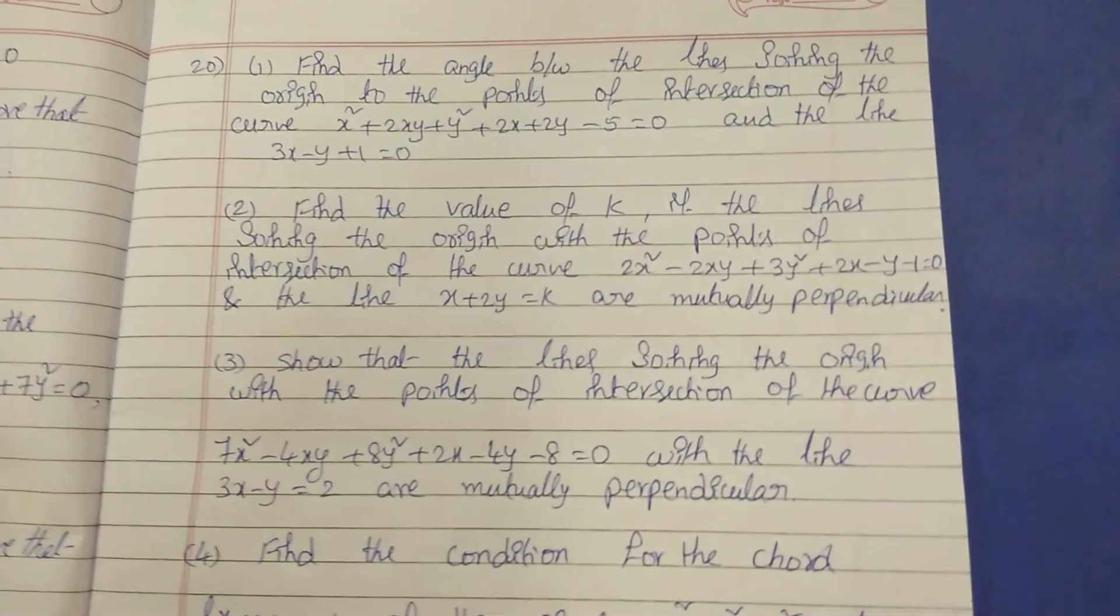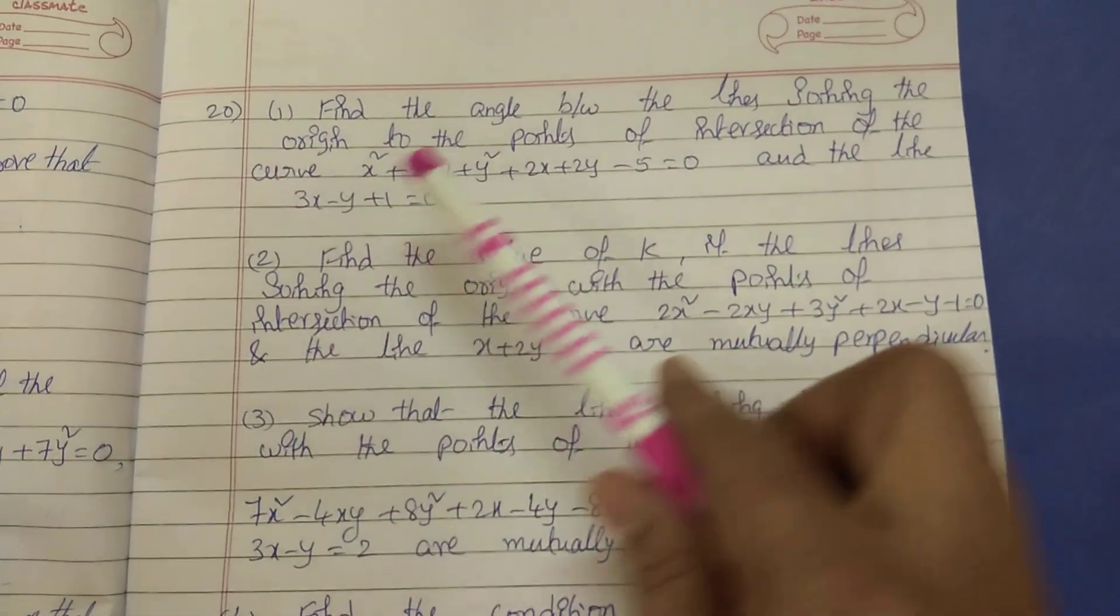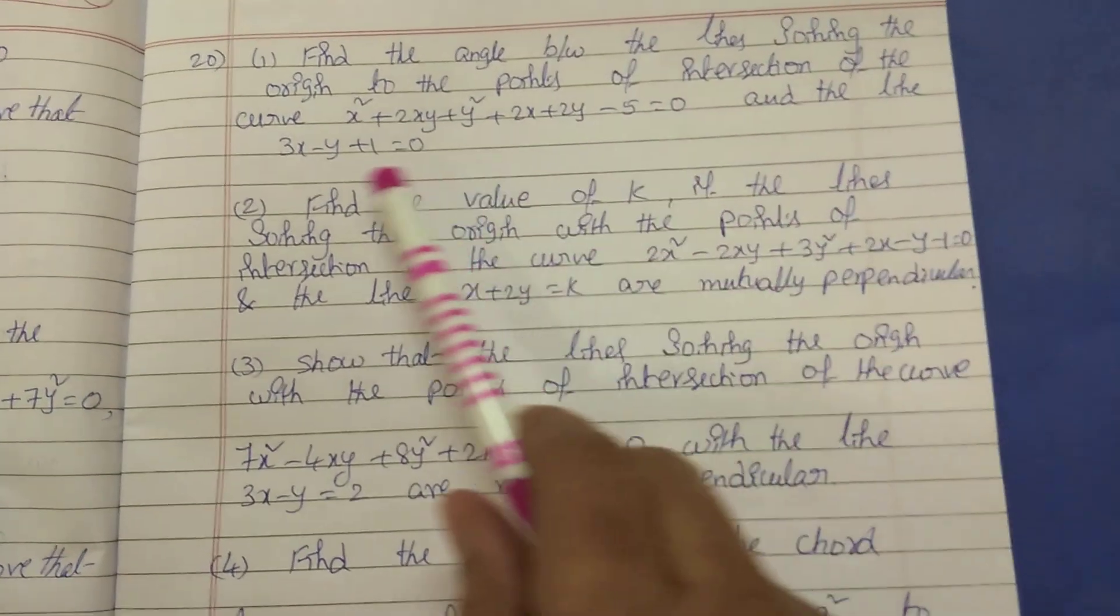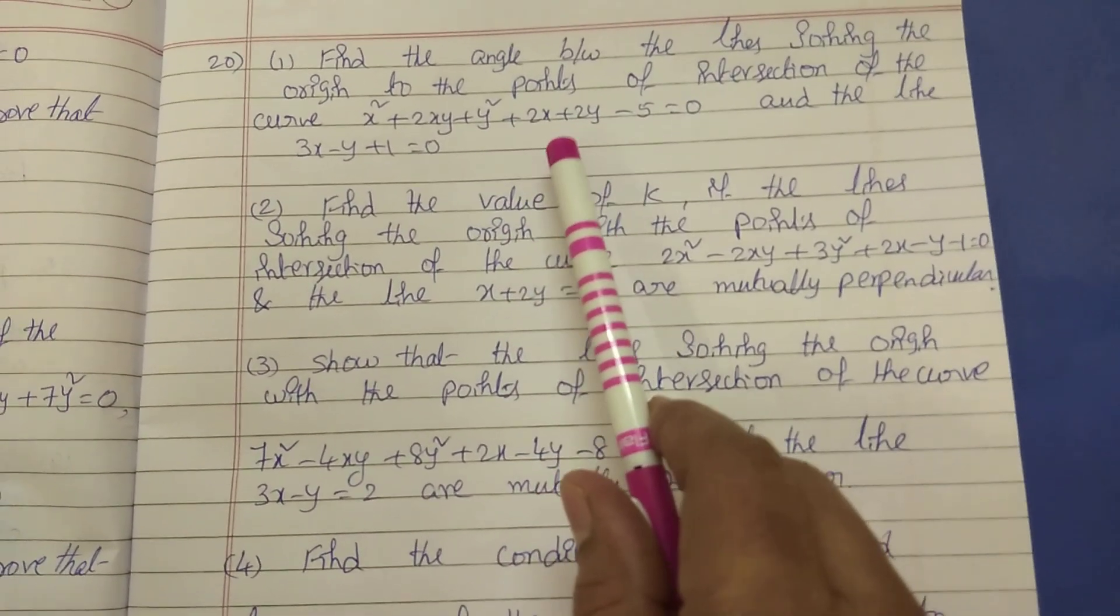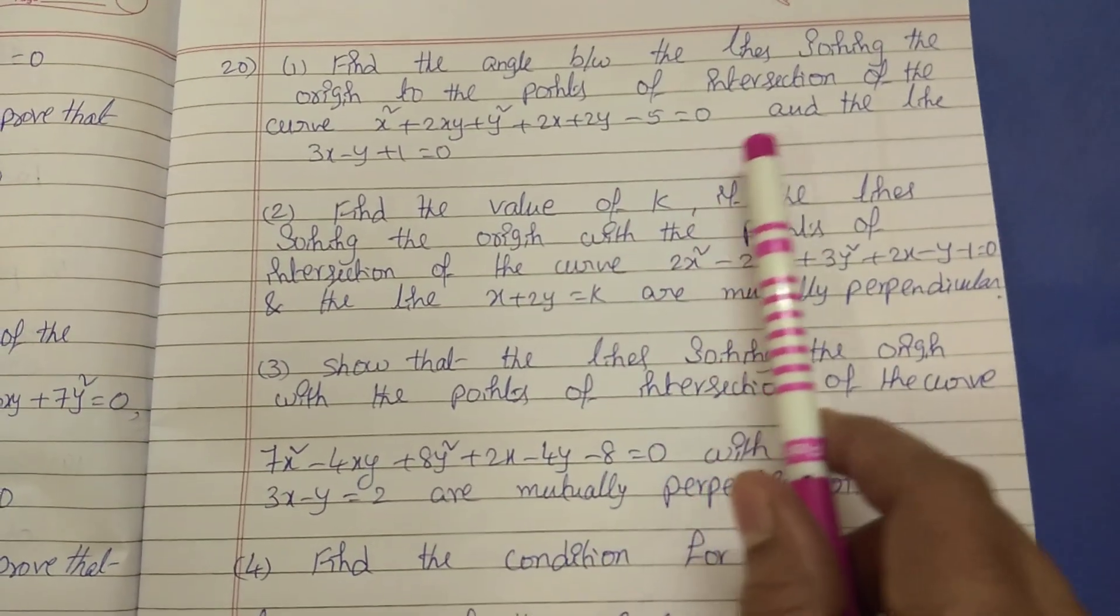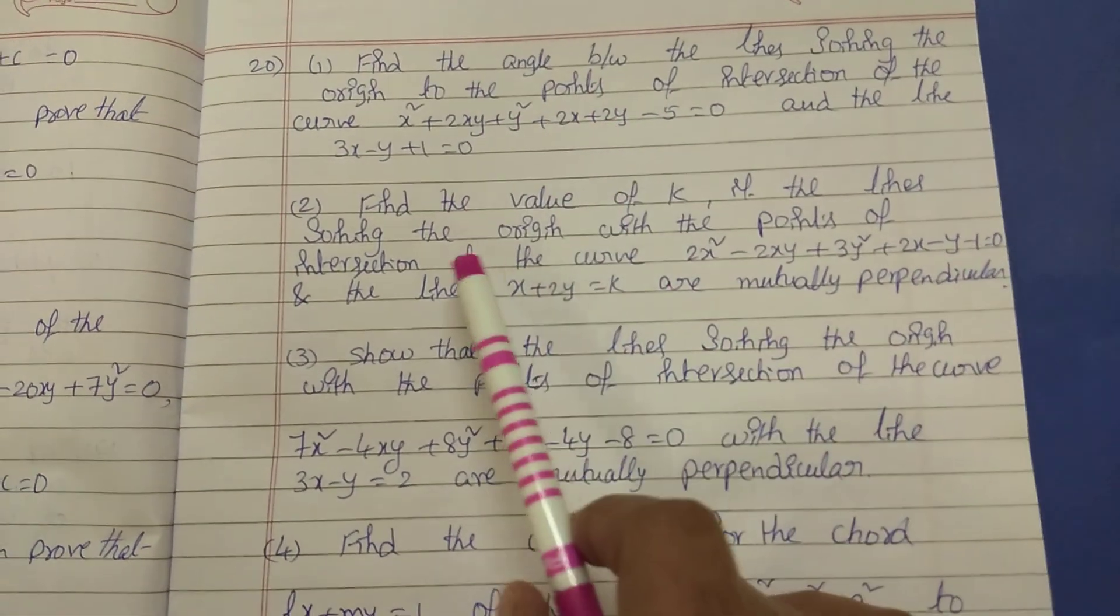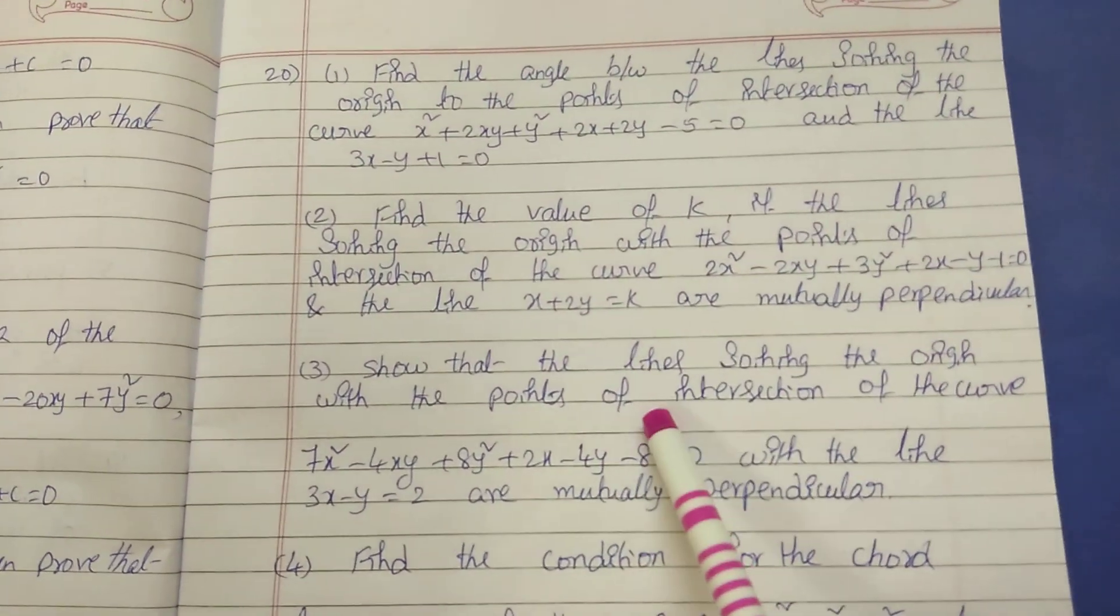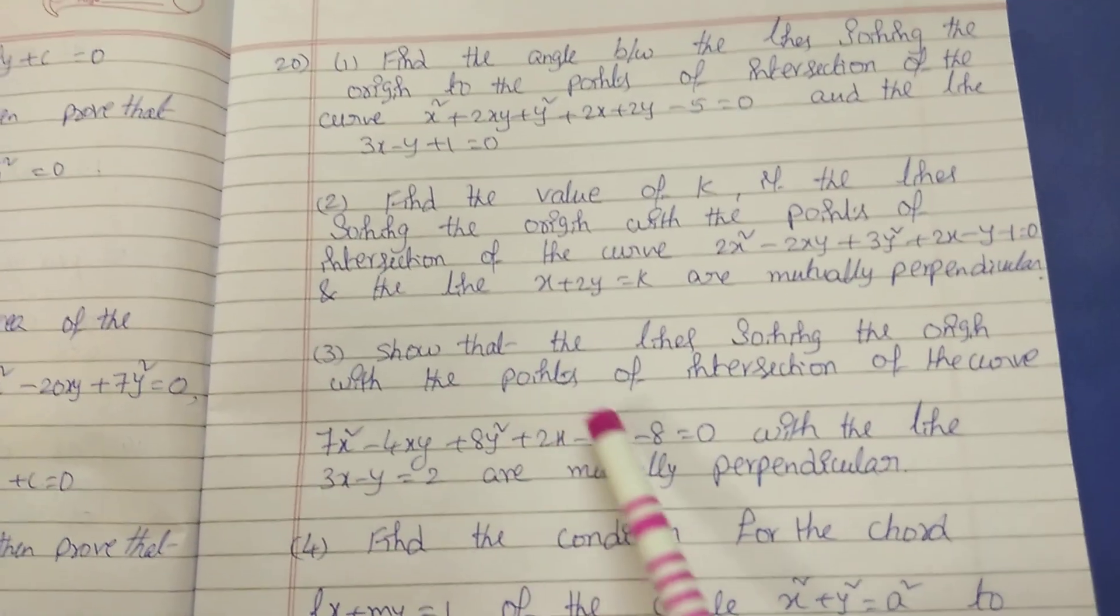Next, in 20 bit, listen here. Find the angle between the line joining the origin and homogenizing sums. Points of intersection of the curve x square plus 2xy plus y square plus 2x plus 2y minus 5 equal to 0 and the line. Next, find the value of k which will be perpendicular. K, how to find it. Like this. And next, which will be perpendicular, show that, prove it.